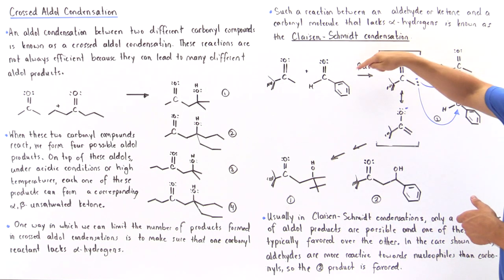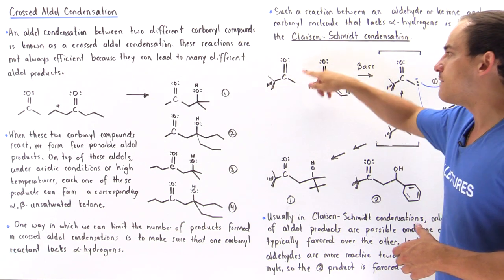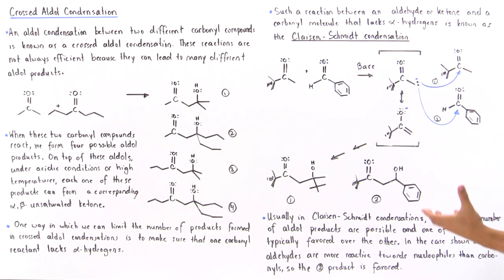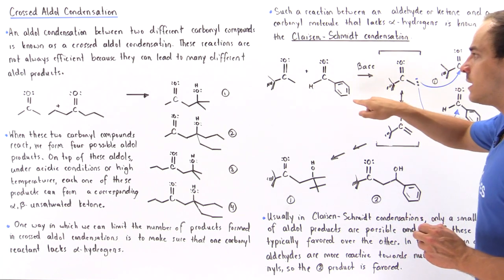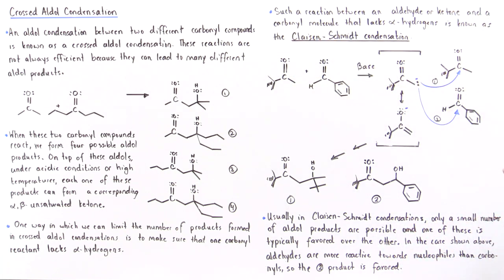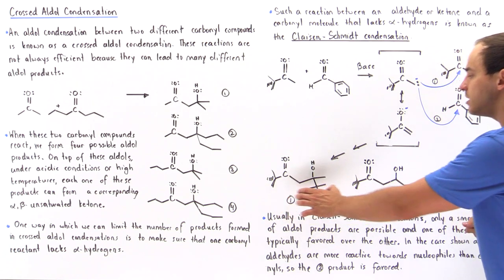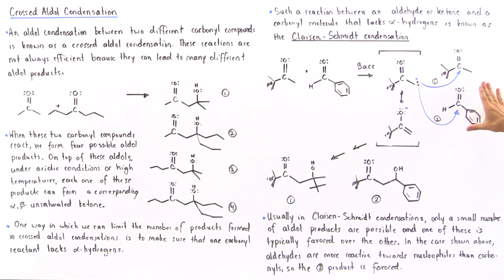Let's suppose we are under basic conditions. When the base grabs the H atom from the alpha carbon of our ketone, we produce a resonance-stabilized enolate that can now act as our nucleophile. It can attack either the carbon of the aldehyde or the carbon of the ketone, so there are two pathways that can be taken. After the final step takes place, we produce either product number one, if our carbon attacks the ketone carbon, or product two, if it attacks the aldehyde carbon.